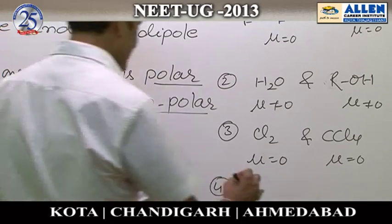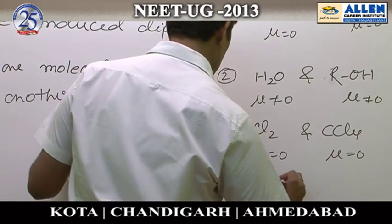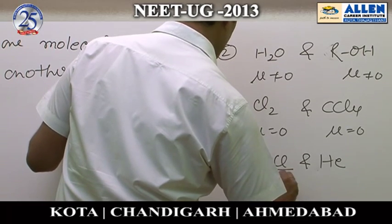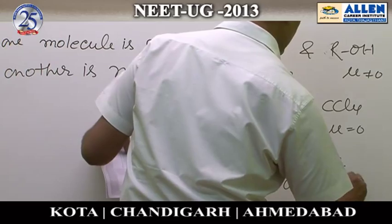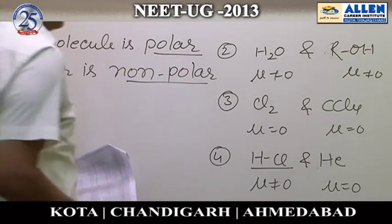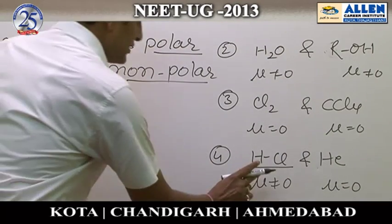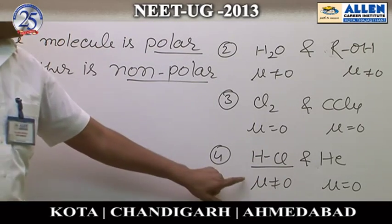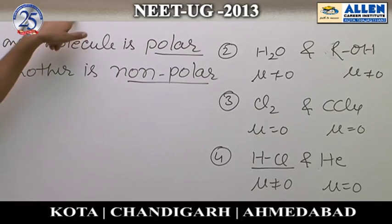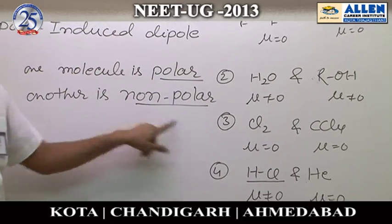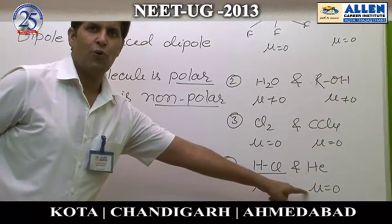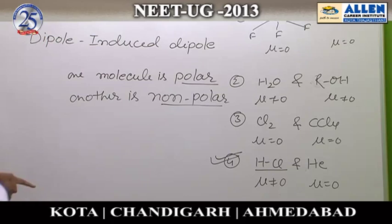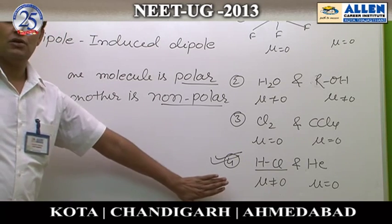Option number four is HCl and He. HCl has mu ≠ 0, it is polar. He has mu = 0, it is non-polar. Therefore, one is polar and another is non-polar, so this would be the answer. Dipole-induced dipole occurs between a polar and non-polar molecule. The correct answer for question 165 is option four.